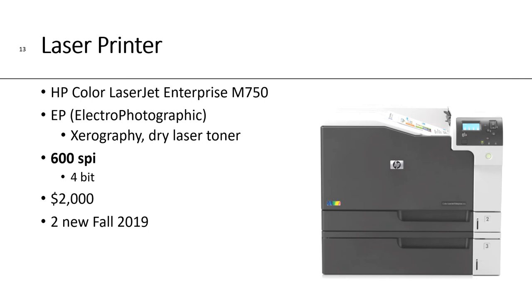Another example of an output device that uses spots would be a laser printer. We have the HP Color LaserJet Enterprise M750s. They are electrophotographic, EP, or xerographic, using a dry laser toner. These devices output at 600 spots per inch, but they're not single-bit binary — they're multi-bit, 4-bit. That printer costs about $2,000, and we purchased two brand new in fall of 2019.